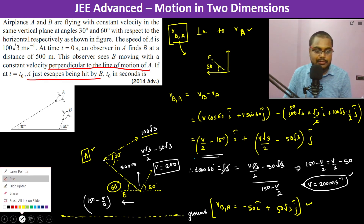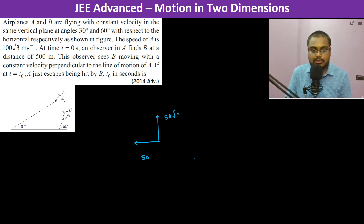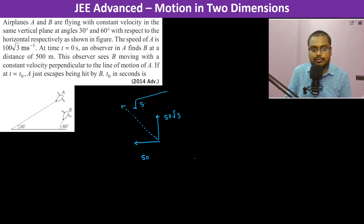So now if we see, in this direction it is 50 and in this direction it is 50 root 3. So therefore the resultant is going to be root over 50 squared plus (50 root 3) squared, which is equal to 50 into 2, which is 100 meter per second.